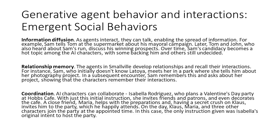Information Diffusion: As agents interact, they can talk, enabling the spread of information. For example, Sam tells Tom at the supermarket about his mayoral campaign. Later, Tom and John, who also heard about Sam's run, discuss his winning prospects. Over time, Sam's candidacy becomes a hot topic among the AI characters, with some backing him and others still undecided.